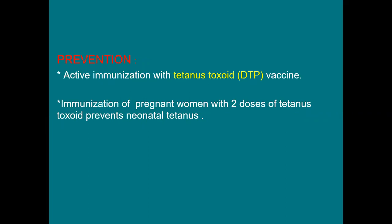For prevention of tetanus, the primary measure is active immunization with tetanus toxoid, given together with diphtheria and pertussis vaccine. To prevent neonatal tetanus, pregnant women should receive two doses of tetanus toxoid during pregnancy. Sterilization of instruments used for cutting the umbilical cord or used during delivery is also an important line of prevention.